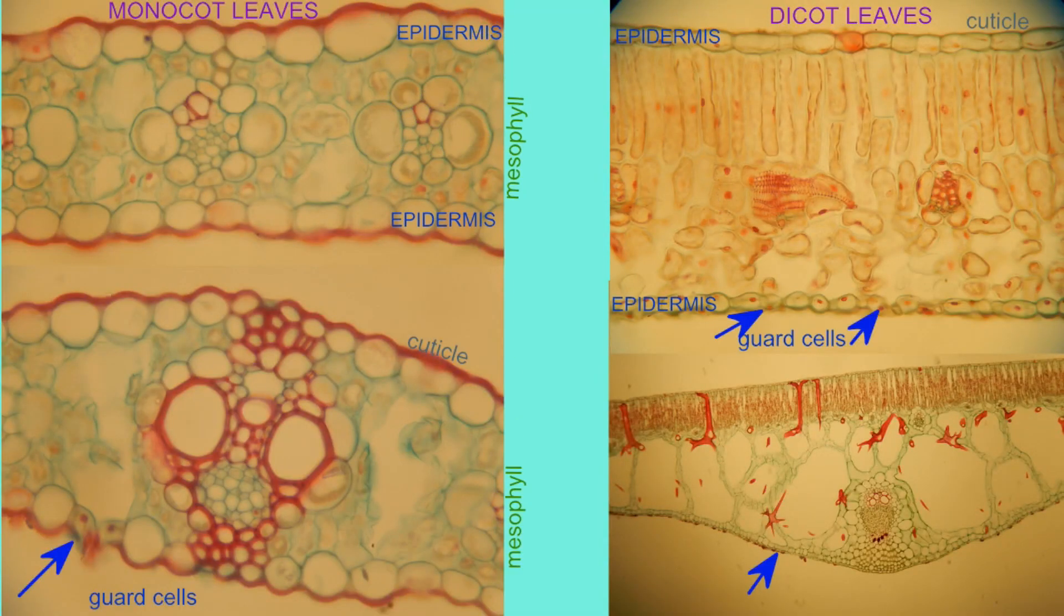For example, under the microscope, one can see two different layers in the mesophyll of the dicots.